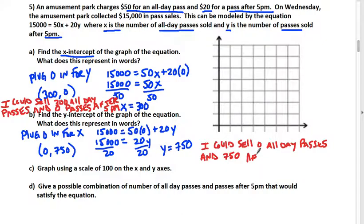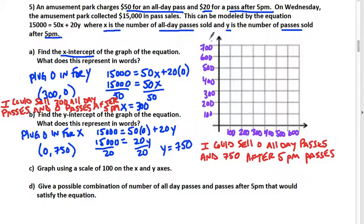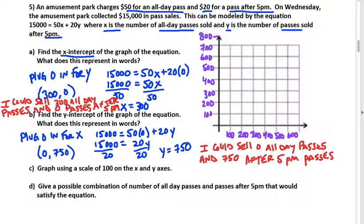And then we're going to graph. It says graph using a scale of 100 on the X and Y axes, so that means go by 100s. Get those labeled. It's helpful to label what your axes represent. Let's label our axes. The X-axis is all-day passes.